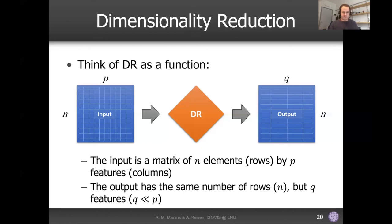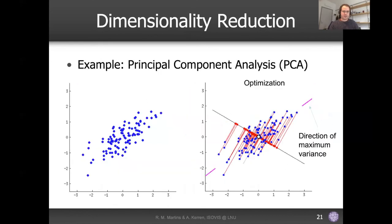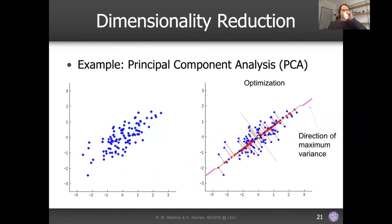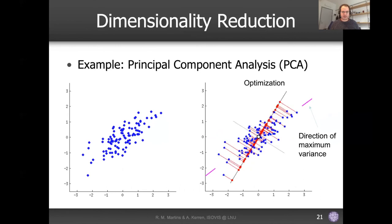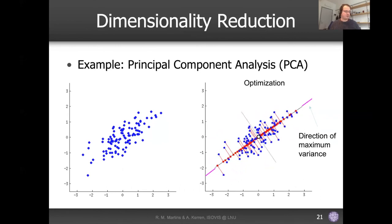Most of the time you gather a lot of dimensions, but you don't need all of them. If you compute correlations, you will see that many dimensions are sometimes not really informative, or they convey the same information as another dimension. What dimensionality reduction does is reduce the dimensions as much as possible while not losing too much information. The input is a matrix of n elements by P features; the output has the same number of rows but much fewer dimensions.